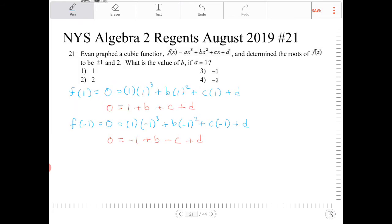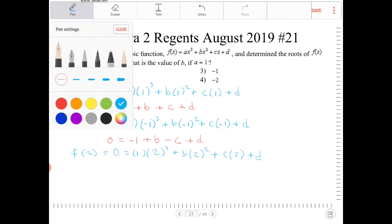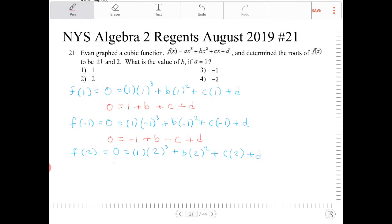And last time, f of 2, pop in the root, function f of x will evaluate to 0. So, I have 1 times 2 cubed plus b times 2 squared plus c times 2 plus d. And what will that evaluate to? This will give me 0 equals 8 plus 4b plus 2c plus d.